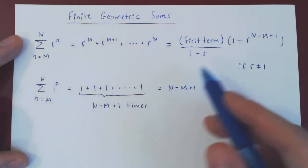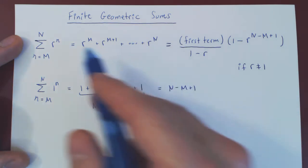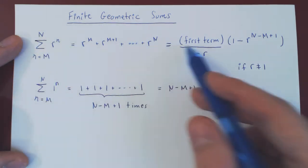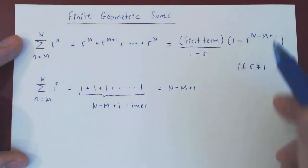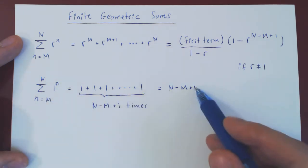So these are your two possibilities. Here's the formula for the finite geometric sum when r is any number but 1. And if r is 1, the result is essentially trivial.